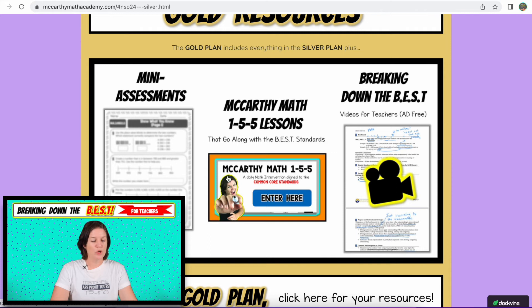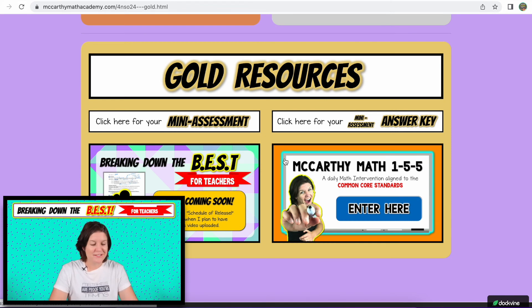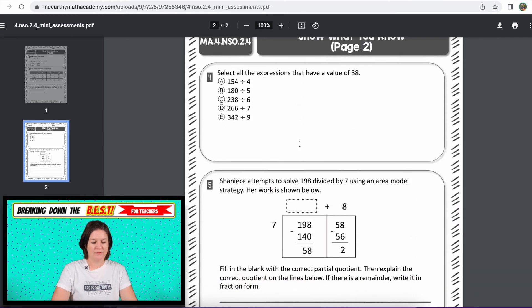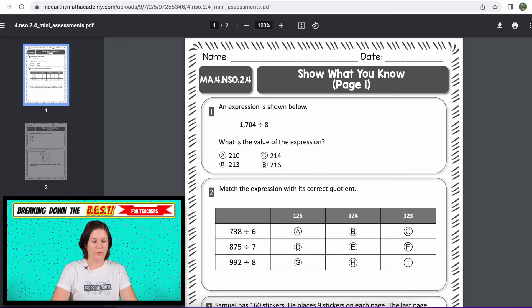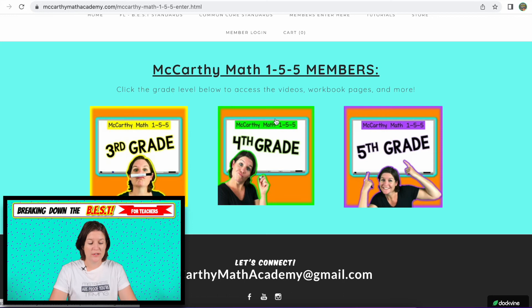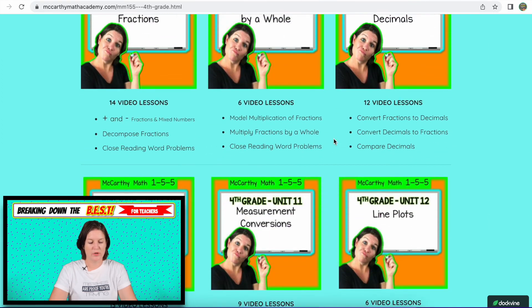And then if you have the gold, you chose to have the gold because of the mini assessments and the McCarthy Math 155 lessons. You also get the little bonus of the Breaking Down the Best standards ad free. But these videos are available on other platforms because I want to try to reach and help as many teachers as I possibly can. So here are the... my audio actually just cut out for this. So I'm going to keep on going because I have audio in a couple other places. If you hear a difference, I'm sorry. So now we have the mini assessment. Give you a quick peek into here. Just usually a five question assessment. You can take a look at that if you have the gold. You have your answer key right there.